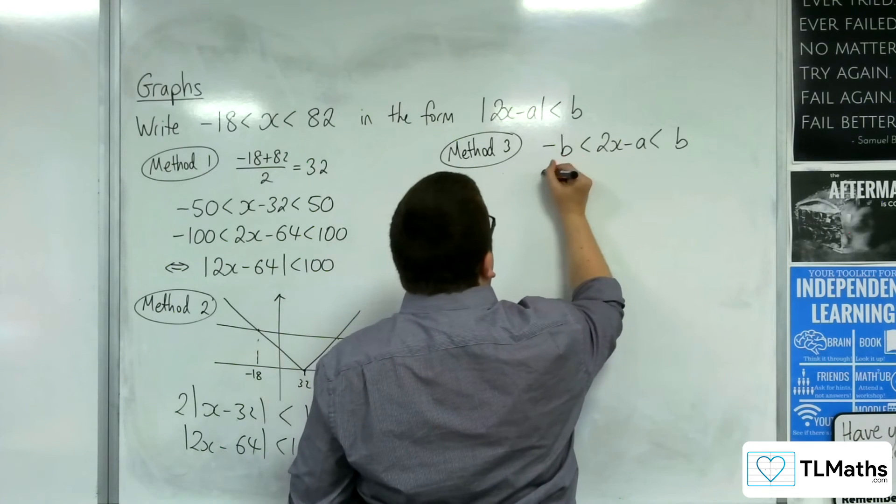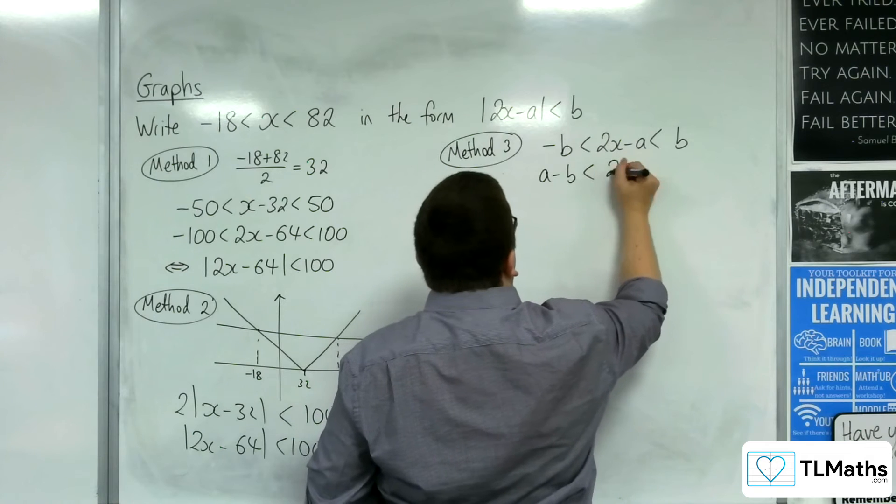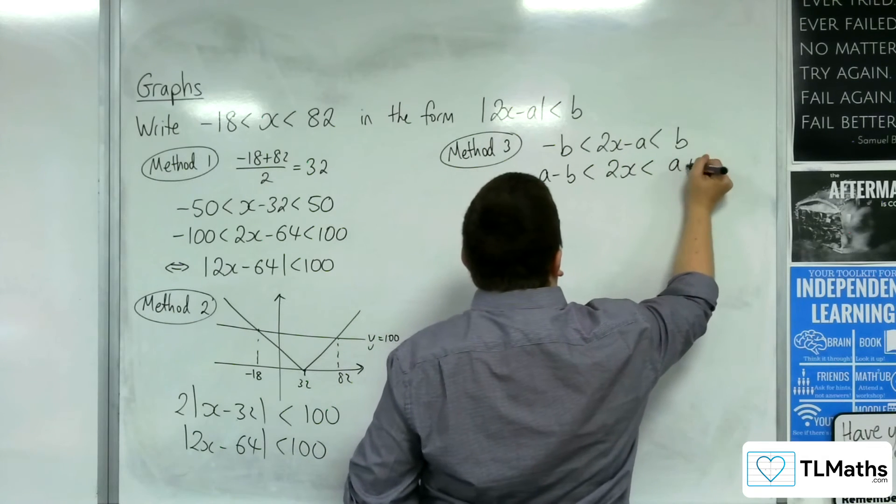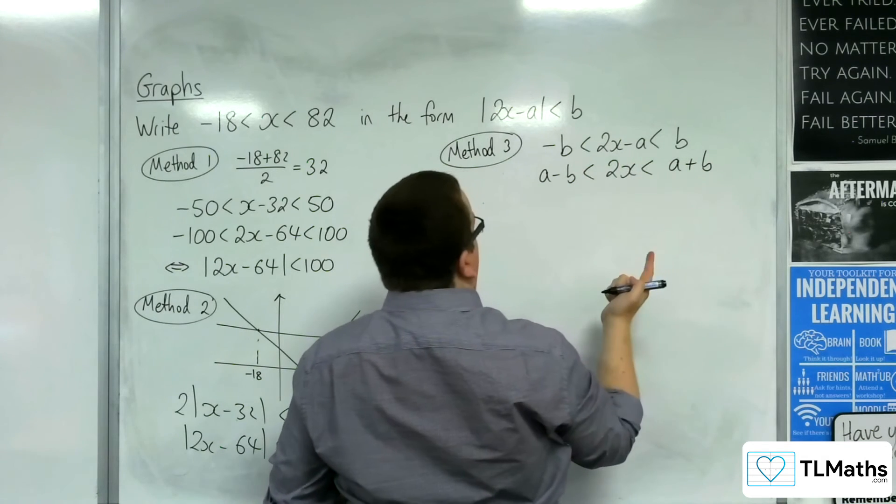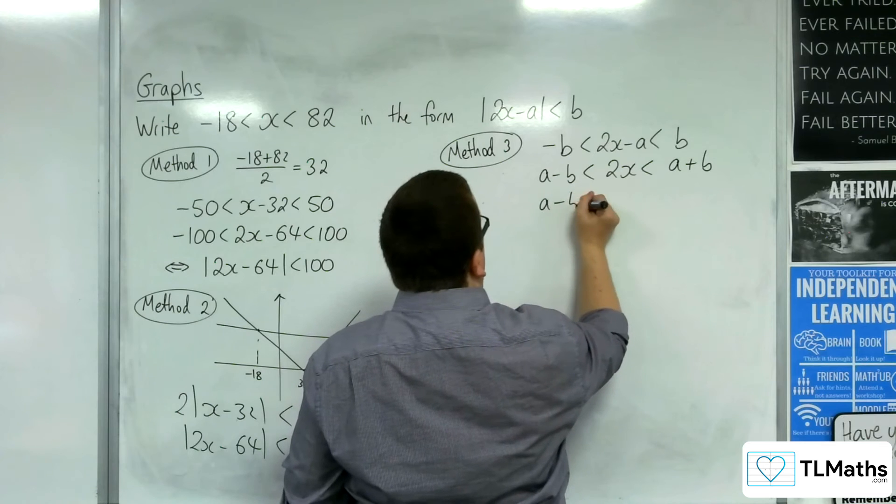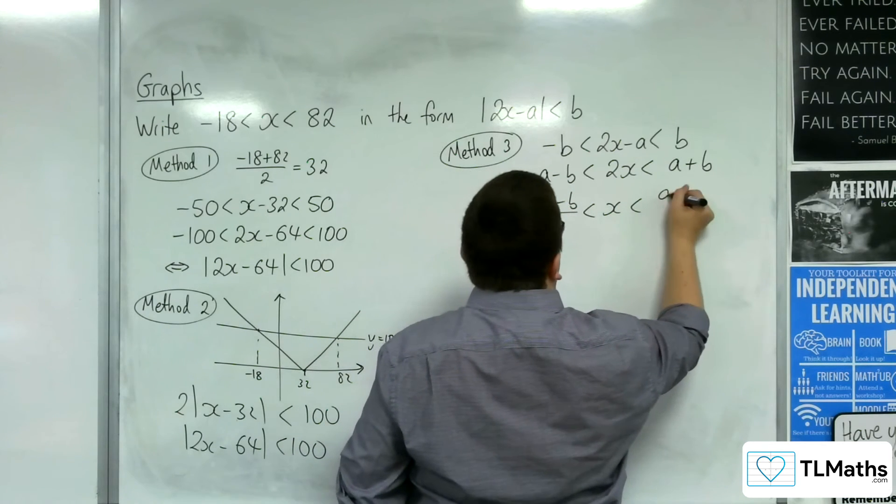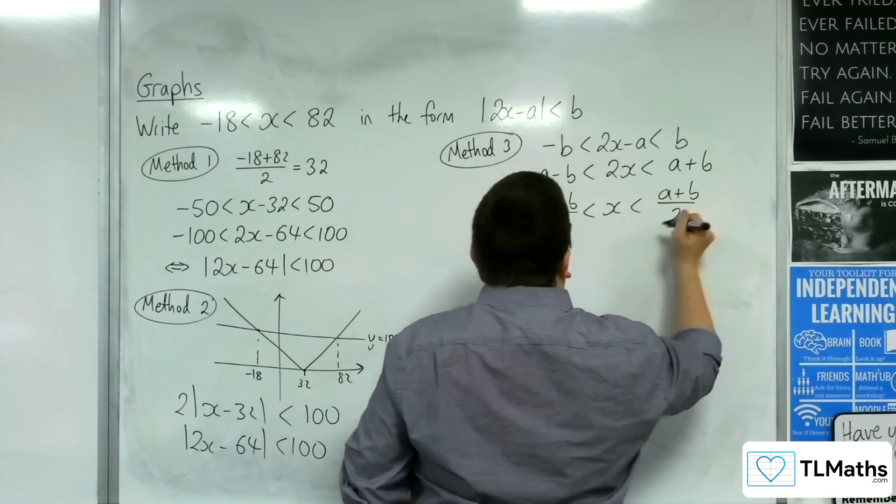Then I can add a to each side, and then I can divide everything through by 2.